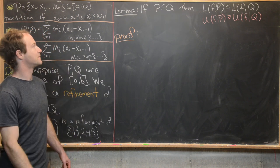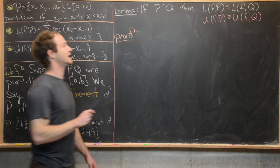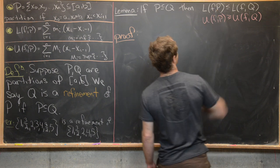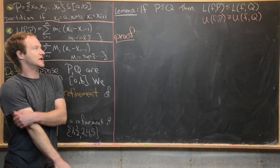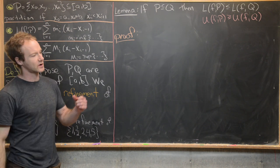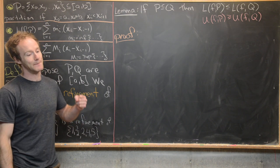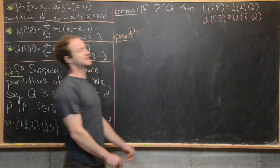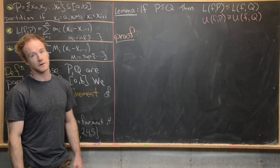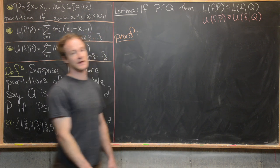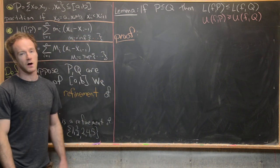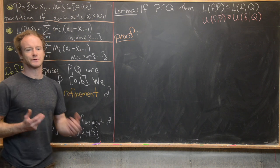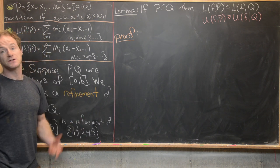We want to prove the following lemma: if P is a subset of Q — in other words if Q is a refinement of P — then L(f,P) is less than or equal to L(f,Q). So if we refine the partition we get a bigger-than-or-equal-to lower sum. Similarly it follows that the upper sum will get smaller or equal: refining P into Q yields a smaller-than-or-equal-to upper sum. That proof follows almost identically with some inequalities switched.